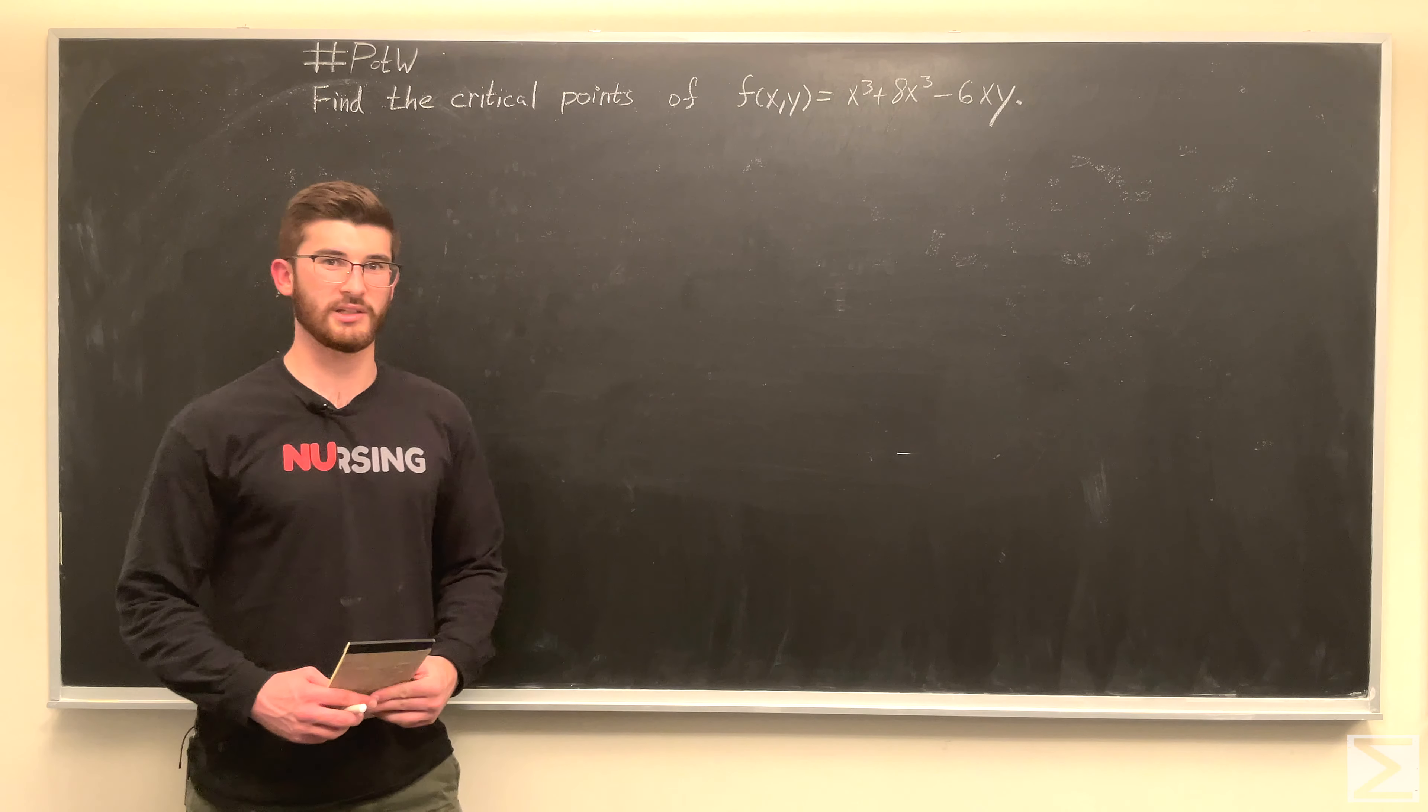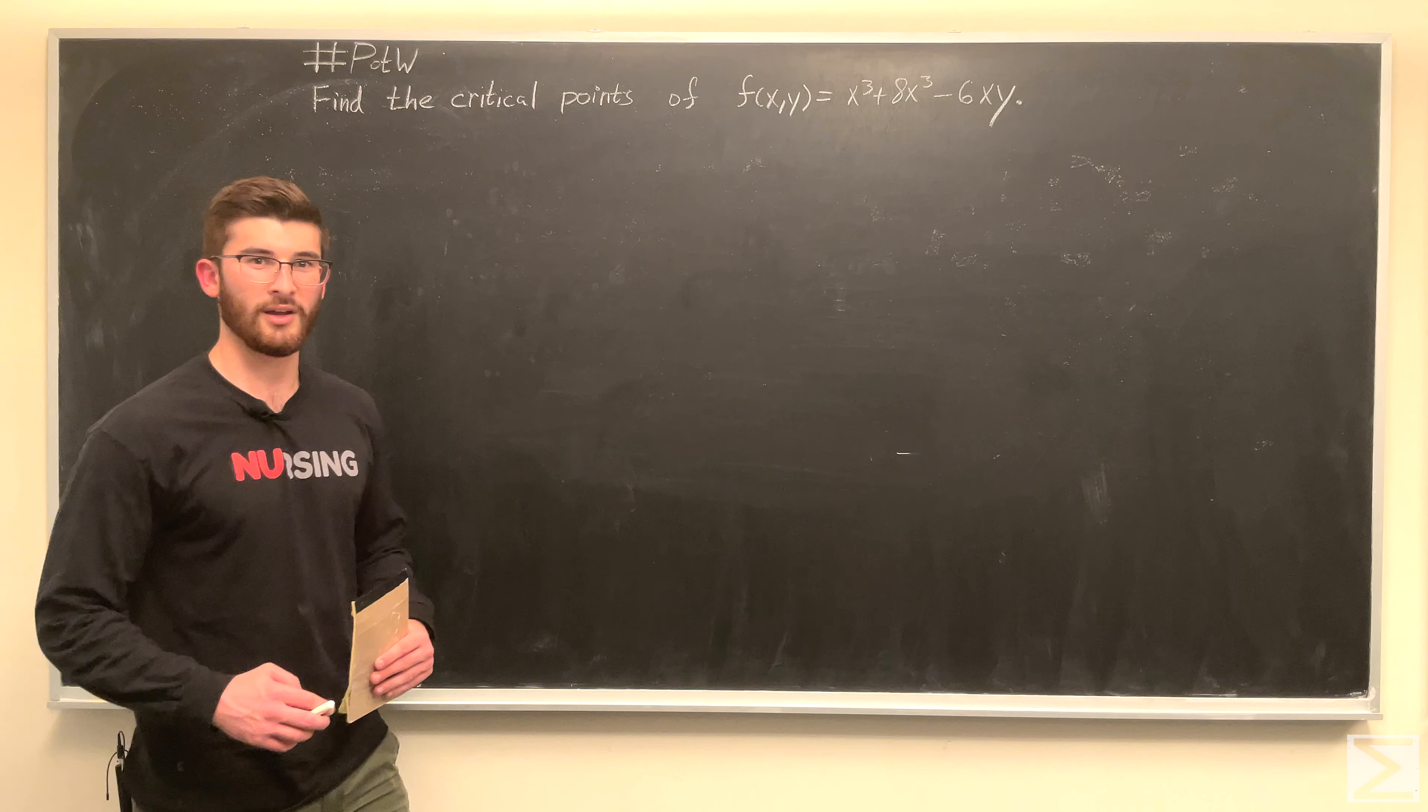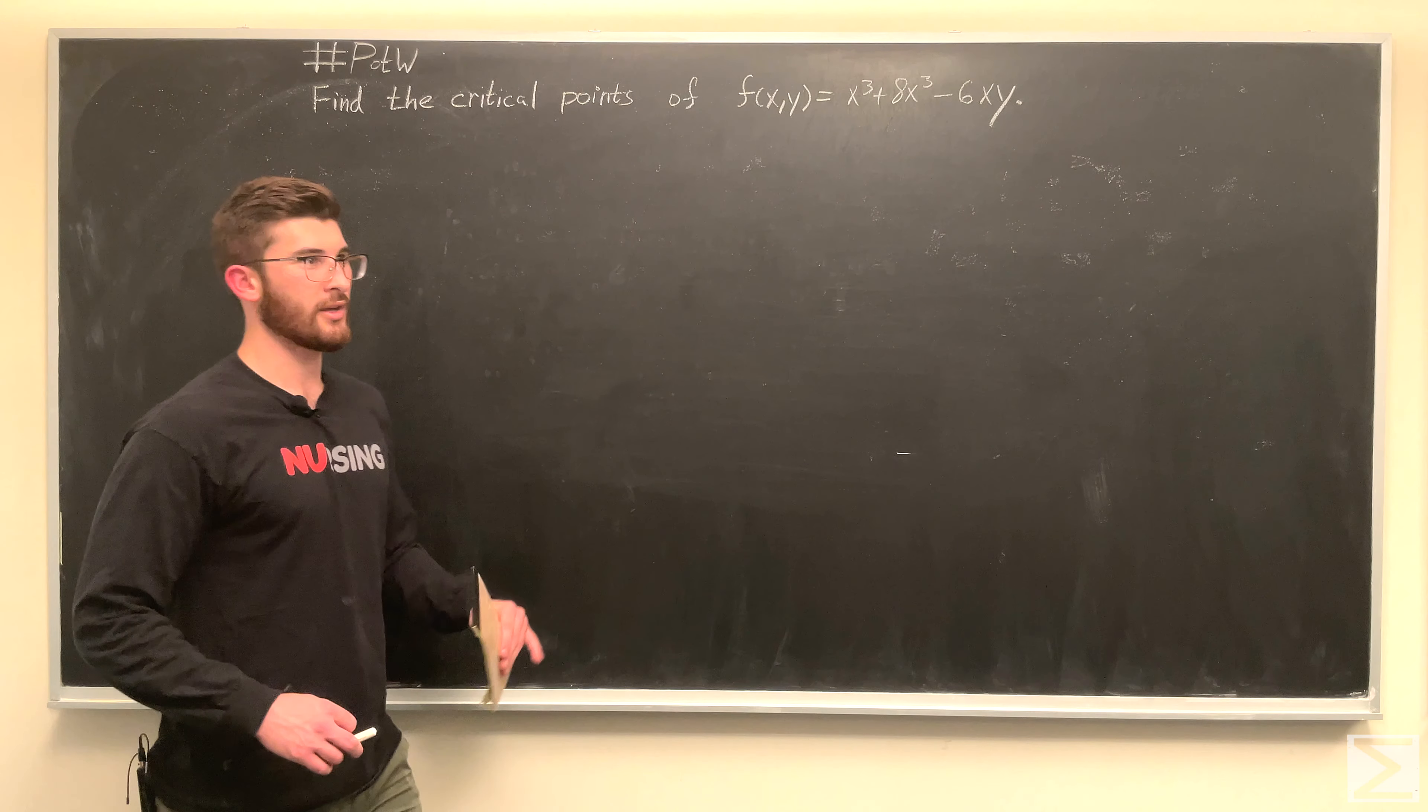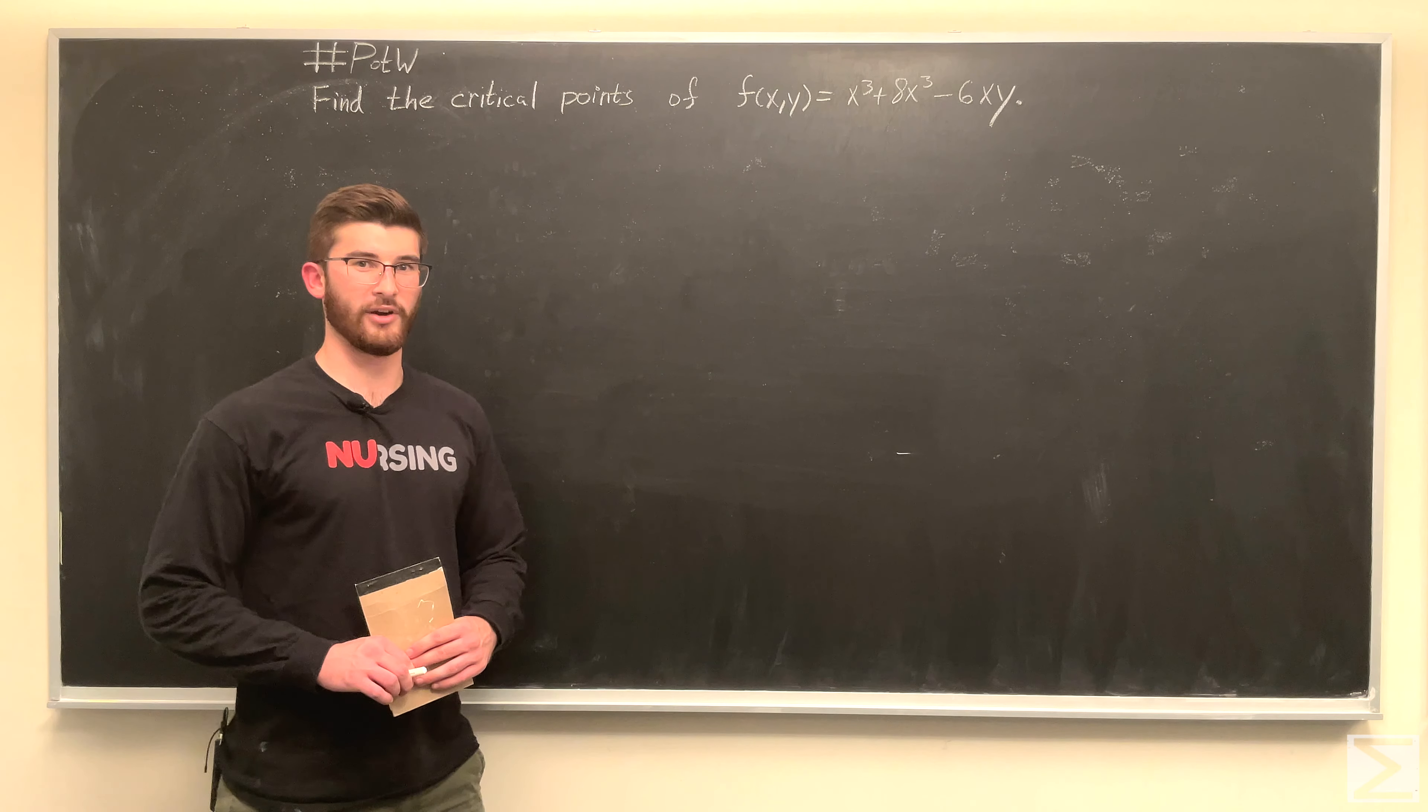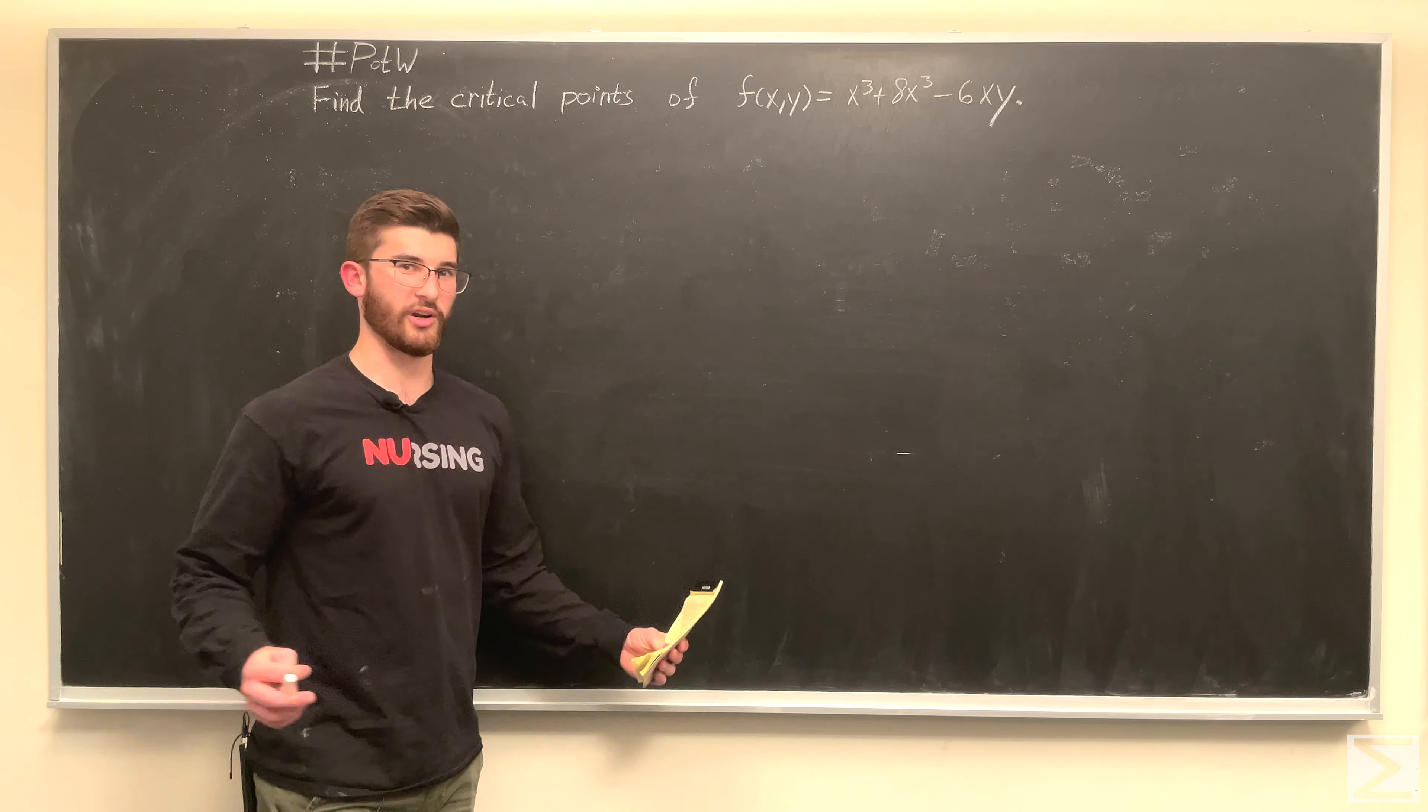Finding the critical points of a multivariable function is not completely dissimilar from finding the critical points for a function of one variable. So first, we're going to take the partial derivatives with respect to both variables and set them equal to 0, and then we're going to algebraically work our way from there.